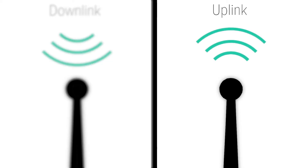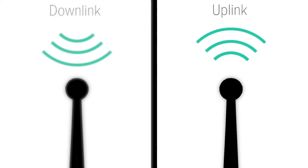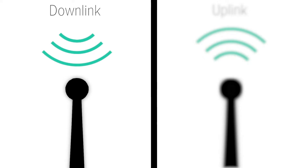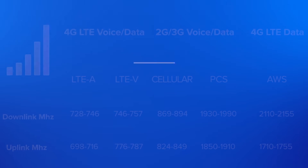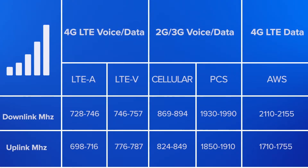Uplink is the signal going to the tower. Downlink is the signal coming from the tower. Increasing downlink is the main objective of the amplifier. Carriers use different bands to transmit different types of signal. If you look at this chart, you can see how it's broken down.